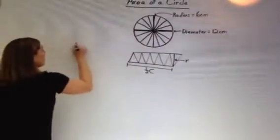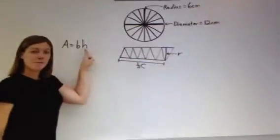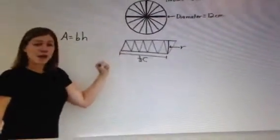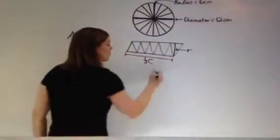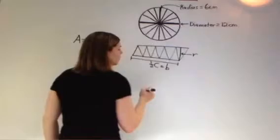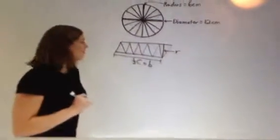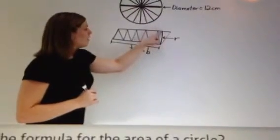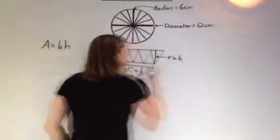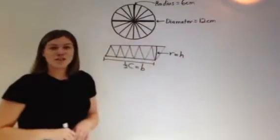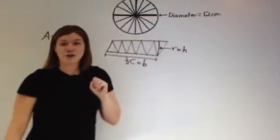The area of a parallelogram is A = b × h, base times height. The base of our parallelogram is one half of the circumference of our circle. The height is the distance from top to bottom, which is the same as the radius of our circle. So the height equals the radius, and the base equals one half of the circumference.